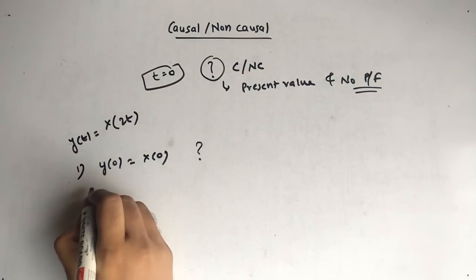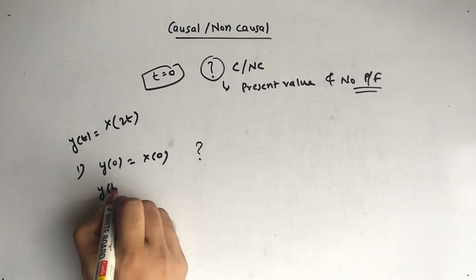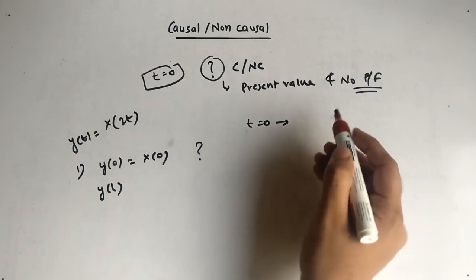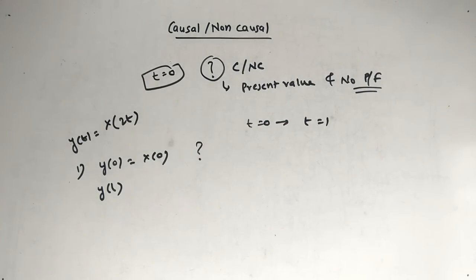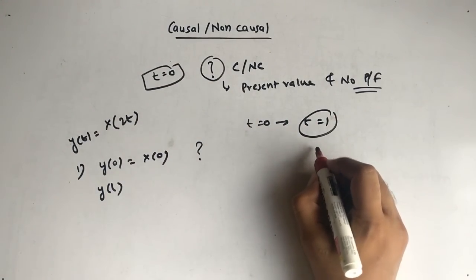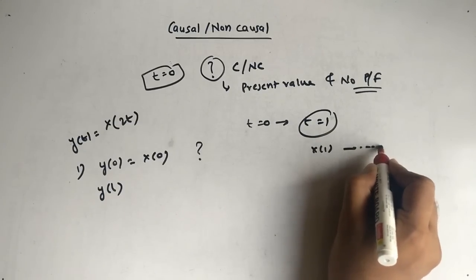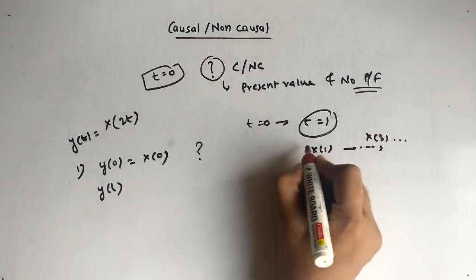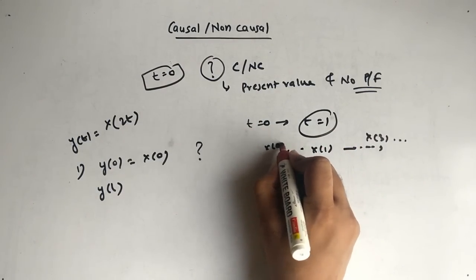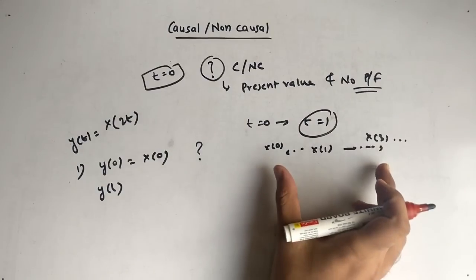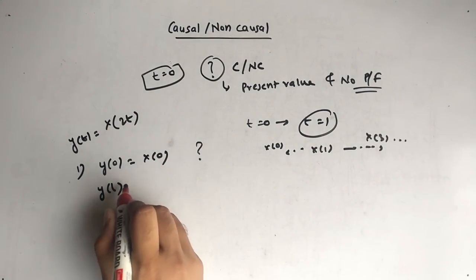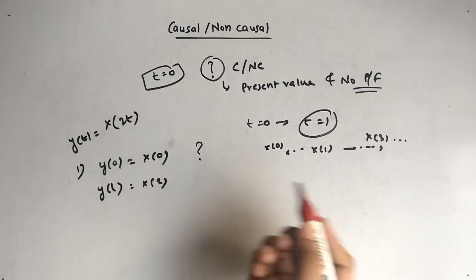Then take another value — put t equal to 1. We are shifting to t equal to 1. Let's check: do we get x(1), a future value like x(3), or a past value like x(0)? After putting t equal to 1 in y(t) = x(2t), we get y(1) = x(2).